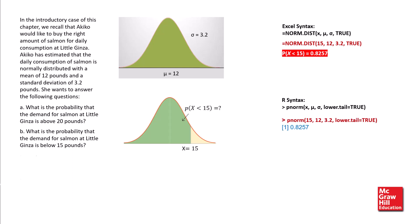How much salmon should be bought so that it meets customer demand on 90% of the days? This probability distribution shows the area in green, which represents the area below this unknown value of x being 90%. To find the value of x,